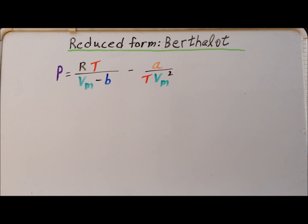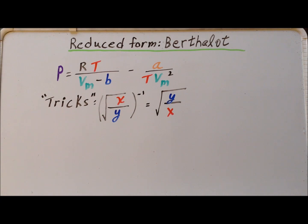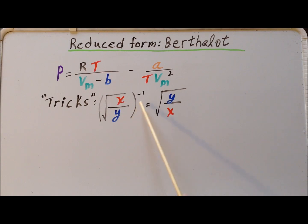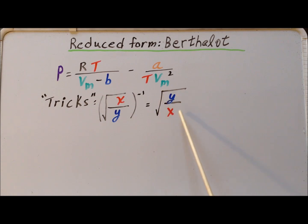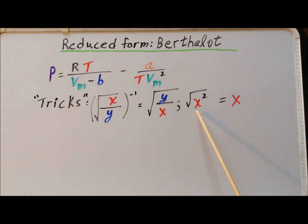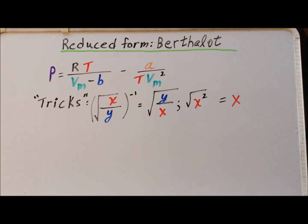As a preparation, I want to list the techniques we are going to employ in our derivation. The first property is that if I have the square root of X divided by Y and then take its reciprocal, that gives me the square root of Y over X. Next, if we take the square root of X squared, this simply gives us the positive value X. We can do this because all the quantities involved in the Berthelot equation are non-negative.